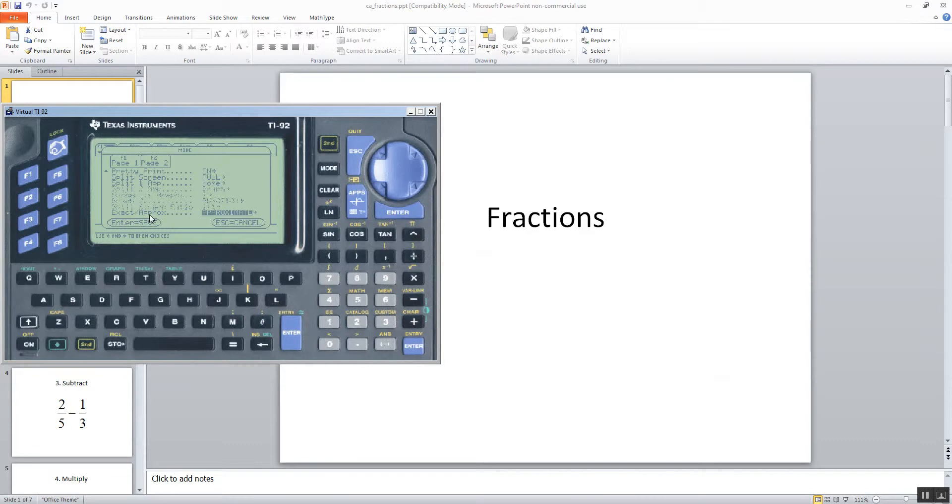Now the very bottom here says exact and approximate. And if you choose exact on that, then it'll already be in fraction form. So if I were to do my right arrow key and then up and choose exact, and then enter to save that.